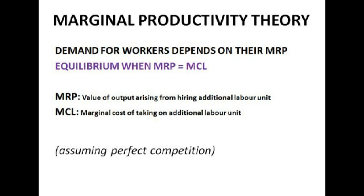Say you're hiring cleaners. If you're hiring two cleaners, you can get a supply of two cleaners at £5 an hour. If you want to hire three cleaners, you're going to have to increase the wage you're prepared to pay to £6 an hour, and you're going to have to pay that to all the workers — you can't just pay it to the additional worker. So you're going to pay all the workers £6.